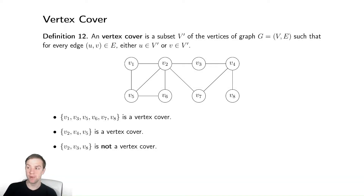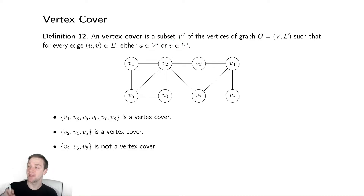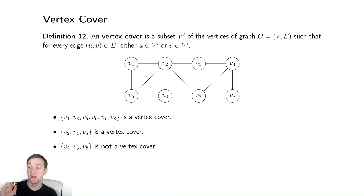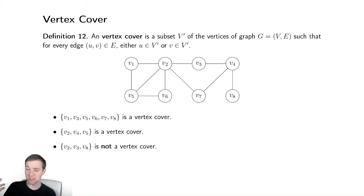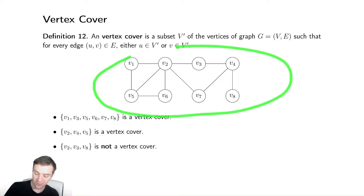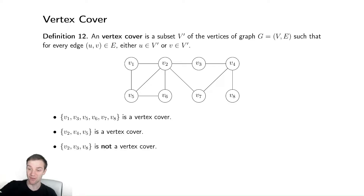Time for our next NP-complete problem, which will be vertex cover. A vertex cover is a subset of the vertices of a graph. A vertex cover requires that every single edge in the graph has at least one of its vertices in our vertex cover. This is different than our previous problems because we want this set to be small to make it optimal, since a valid one would be every single vertex of the graph — of course you have every single edge covered by doing that.